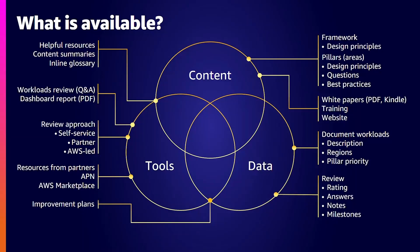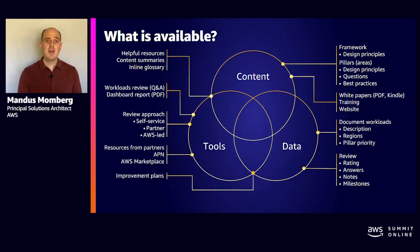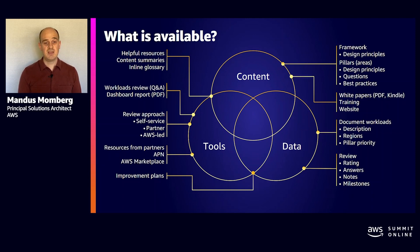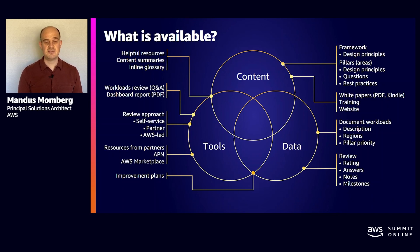What does this framework consist of? What is part of this framework that guides you and teaches you these best practices? Primarily, we have three main parts: we have content, we have tools, and we have data. The content of the well-architected framework is in those pillars and the foundations of those pillars — it is the framework itself. It provides you with the design principles, the best practices, and the guidance of how to achieve those things.